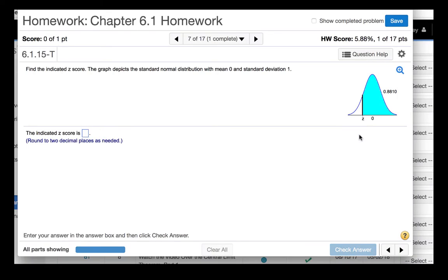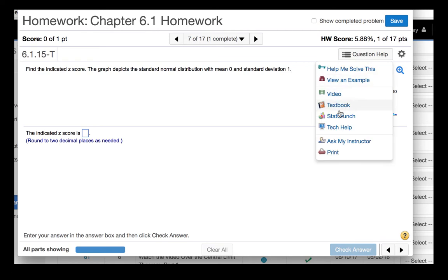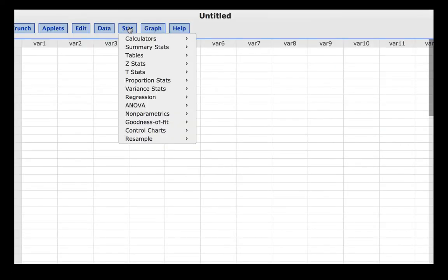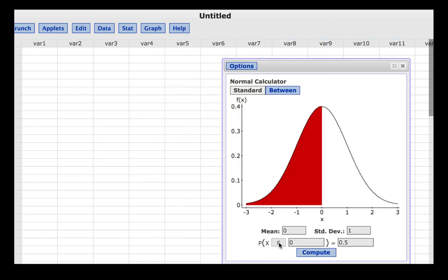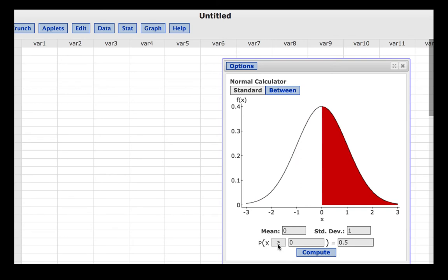In this case we are to do the same except the area is shaded to the right. So we will go back to StatCrunch and click Stat, Calculators, Normal. We will change the inequality to greater than so that the shaded area goes to the right.